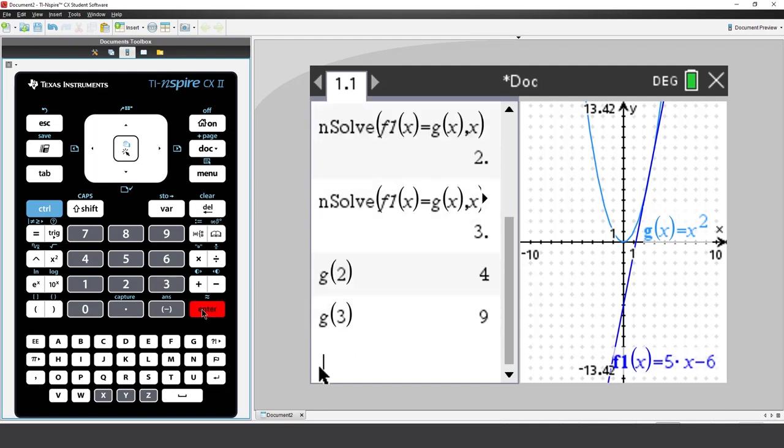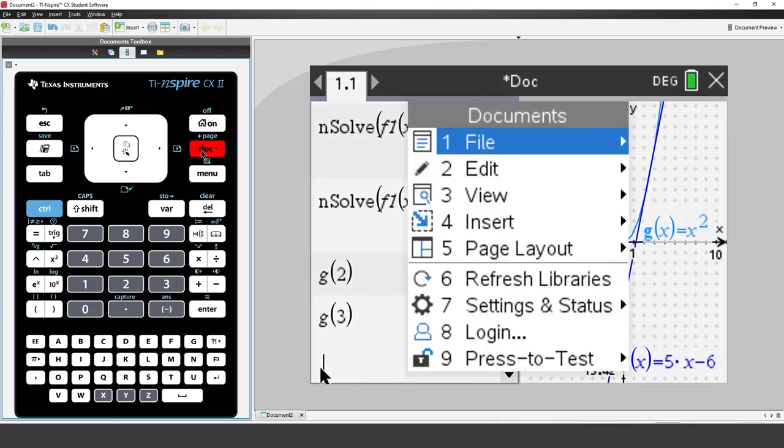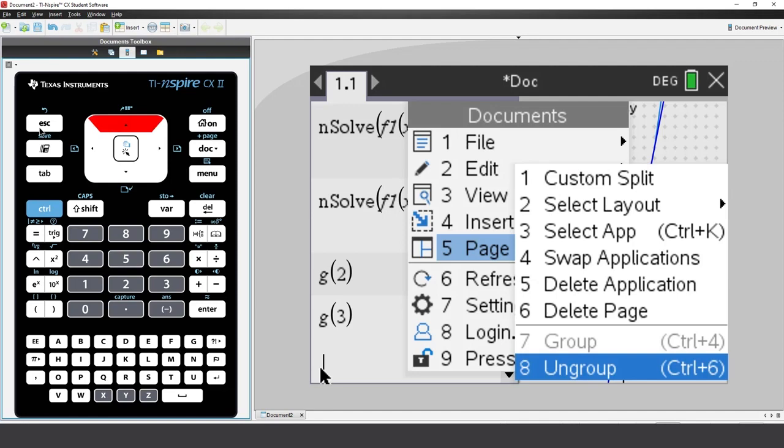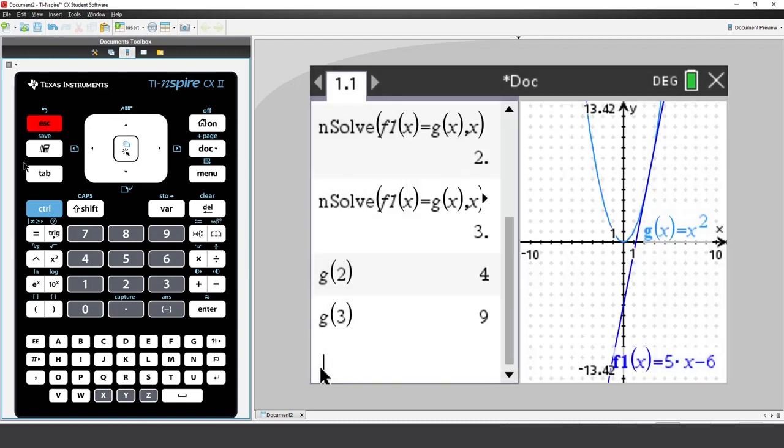I could also use the graph to check. Now, I want to see the graph on a full screen. Press the Document key, select Page Layout, and you'll see an option to Ungroup Applications. But notice next to it in the parentheses it says Control plus 6. Let me just escape out of this menu, and press Control 6.